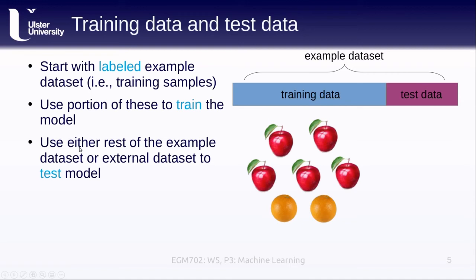We then either use the rest of the example data set, so the data that we've held out, or we use an external data set that the computer hasn't seen before in order to test or validate the model. This is how we can identify whether our model is actually performing well or not.